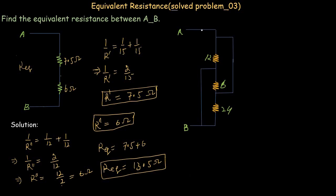Now let's move towards a more complex problem in which three resistors are connected in a certain manner and we are asked to find the equivalent resistance between point A and B. If you look into this circuit, you will see that there are two short-circuit paths available for current to flow — the first path goes from point A towards one node, and the second path goes from that node towards point B.